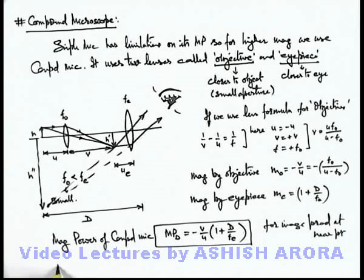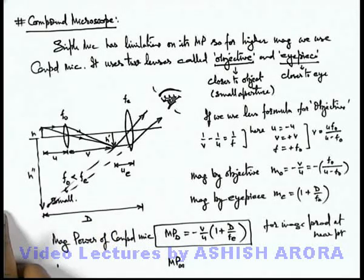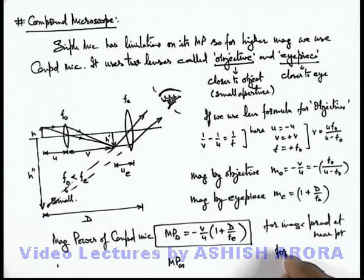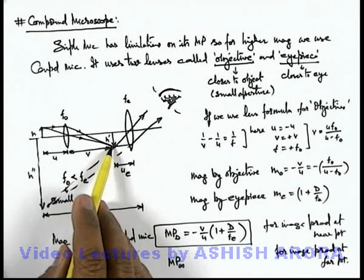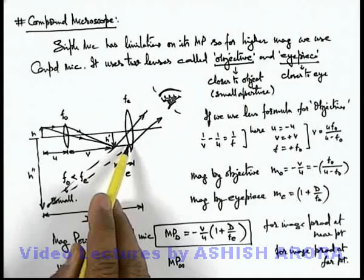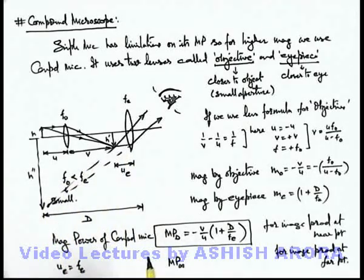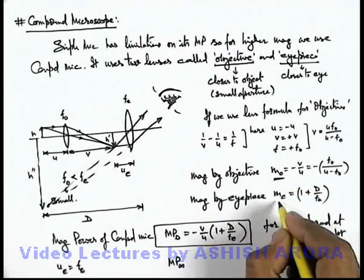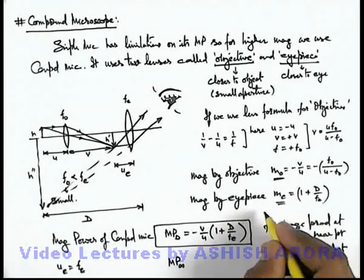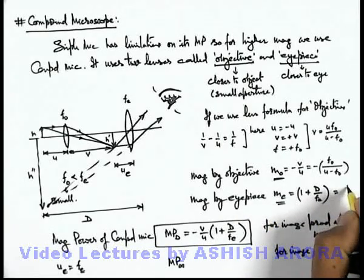Similarly, if we talk about the magnifying power of a compound microscope for the image produced at infinity — that is, at the far point — we can state that in this situation the value of u_e will be equal to f_e, because when the intermediate image is obtained at a distance equal to the focal length from the eyepiece, the final image will be at infinity.